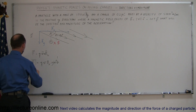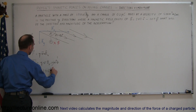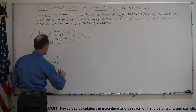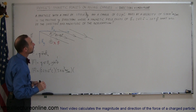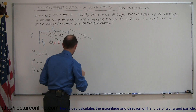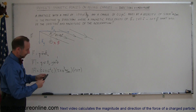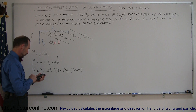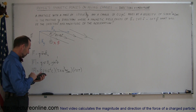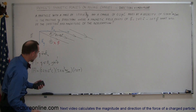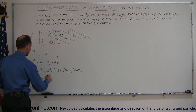Now we plug in the numbers. The magnitude of the force is equal to the charge, which is 0.2 times 10 to the minus 6 coulombs, times the velocity, which is 5 times 10 to the third meters per second, and then we multiply times the x component of the magnetic field, which is 2.0 Teslas. That gives us 2 times 10 to the minus 3 Newtons, which is 2 millinewtons.